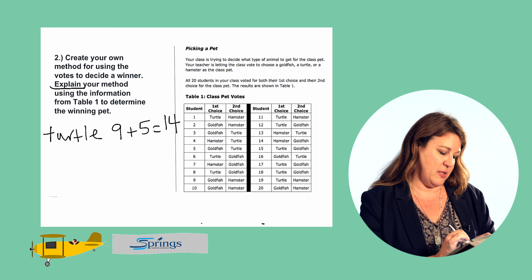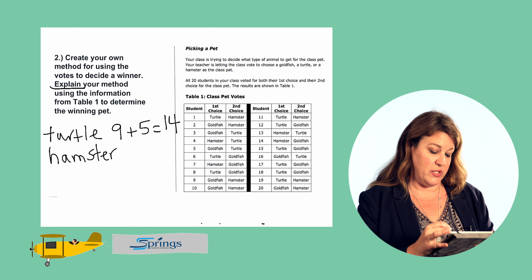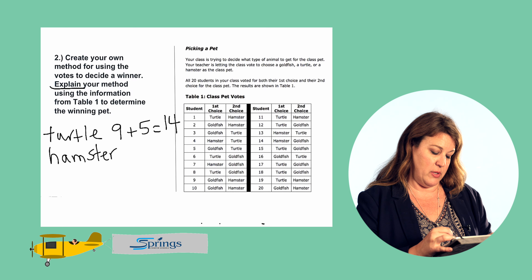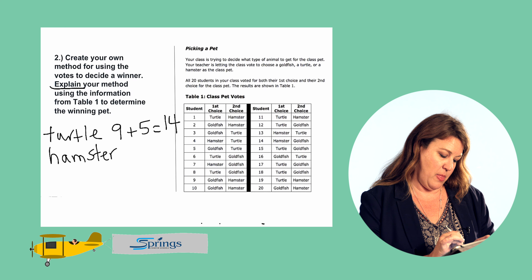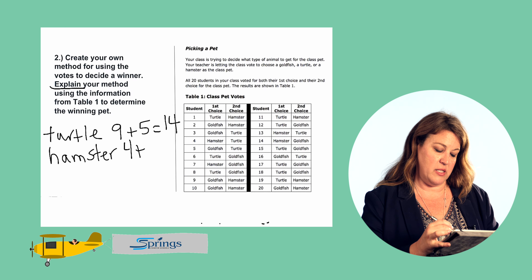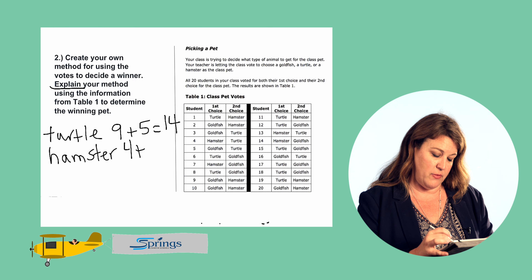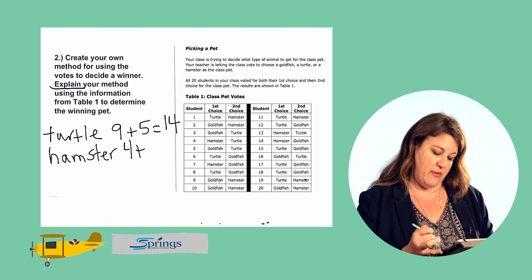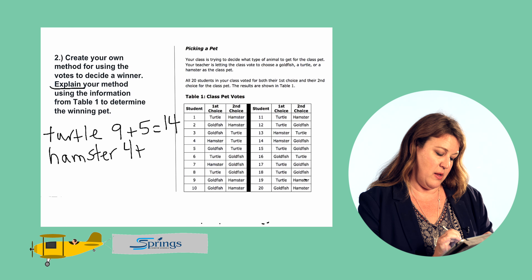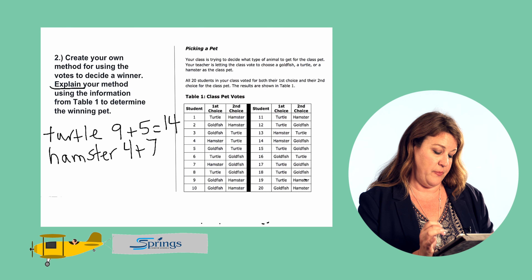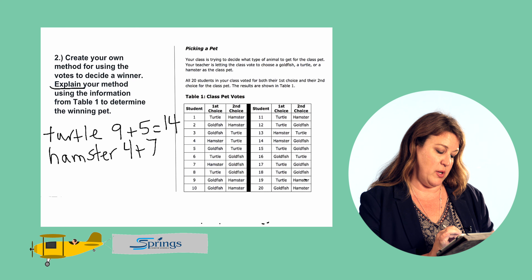Let's take a look at the hamster. We'll first count the first choice votes the hamster received — that's four first choice votes for the hamster. Now let's look at the second choice column and see how many second choice votes the hamster received — that's seven total second choice votes. So we have four first choice votes plus seven second choice votes, which equals 11 votes total for the hamster.